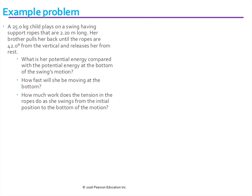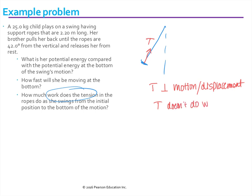The last part of the question asks, how much work does the tension in the ropes do? I'm going to just draw the swing again. Here's the swing. The tension in the rope would be like this. Along the rope, the tension is always going to be perpendicular to the motion and the displacement. So tension doesn't do any work, which allowed us to use conservation of energy.